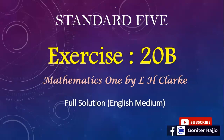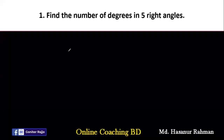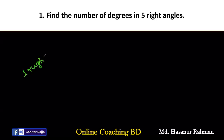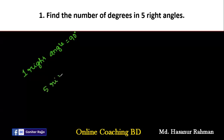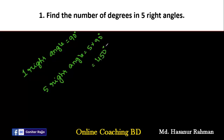Assalamualaikum. Today we'll solve Exercise 20b from Mathematics One. Number one says: find the number of degrees in five right angles. We know that one right angle is 90 degrees, so five right angles will be five multiplied by 90 degrees. That is 450 degrees — that is the solution of number one.